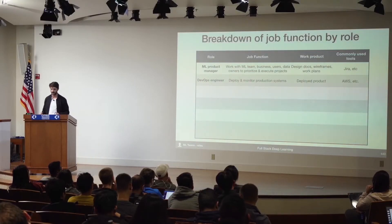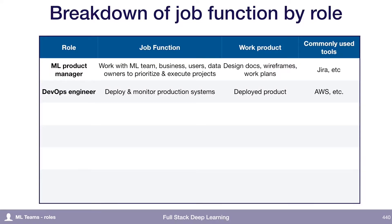Product managers are working with design docs, wireframes, work plans, and operating in project management software like Jira. Then you have DevOps engineers. The role of the DevOps engineer is to deploy and monitor a system into production. Their work product — the end product of their work — is a model that's actually deployed into production, and they're often using the AWS suite of tools to do that.